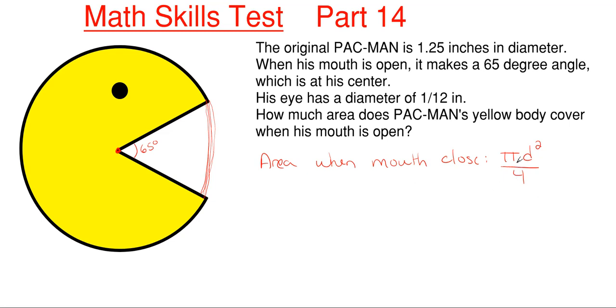So finding his total area would be pi times his diameter, which is 1.25 inches squared over 4, and this pops out to be π/4 times 1 and 9/16ths inches squared. And we're going to leave it as an exact area because the final answer comes out to be pretty interesting. That would be his total area when he's not eating or chomping.